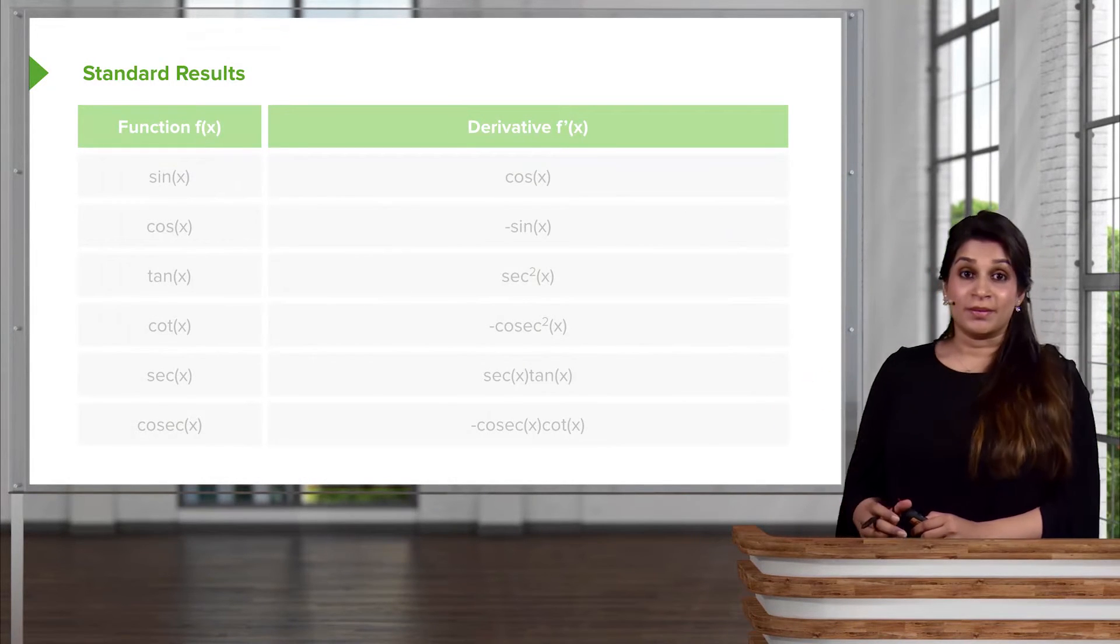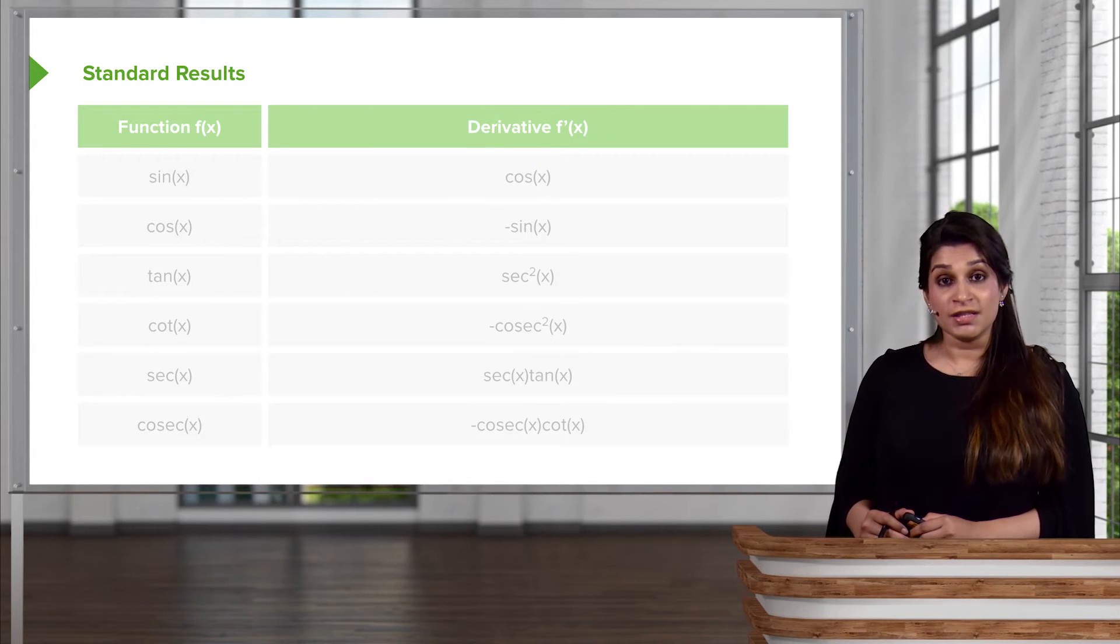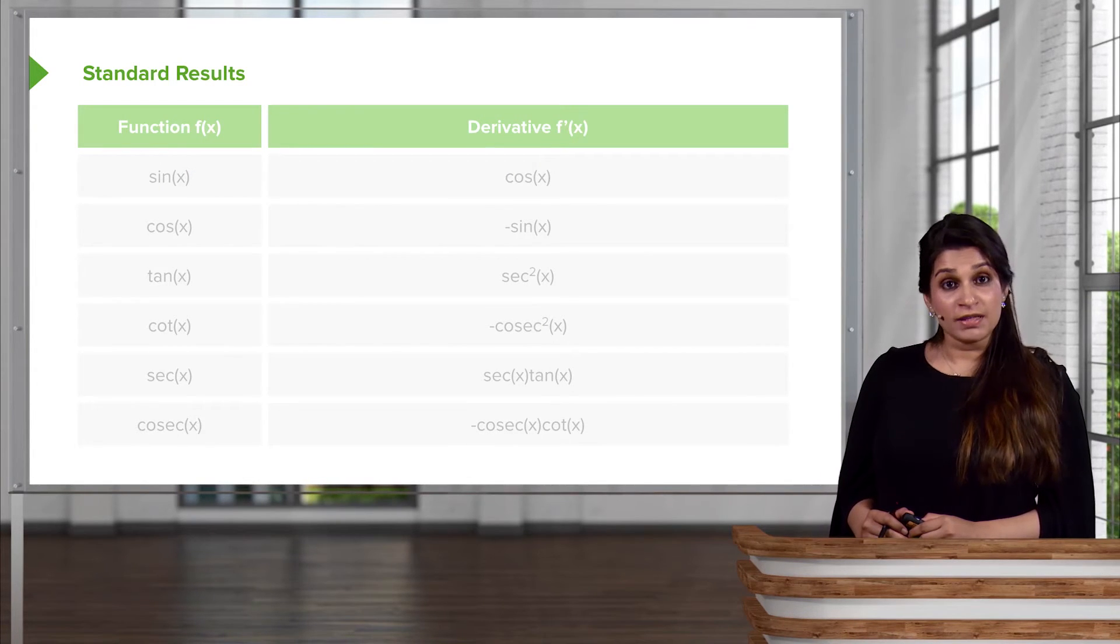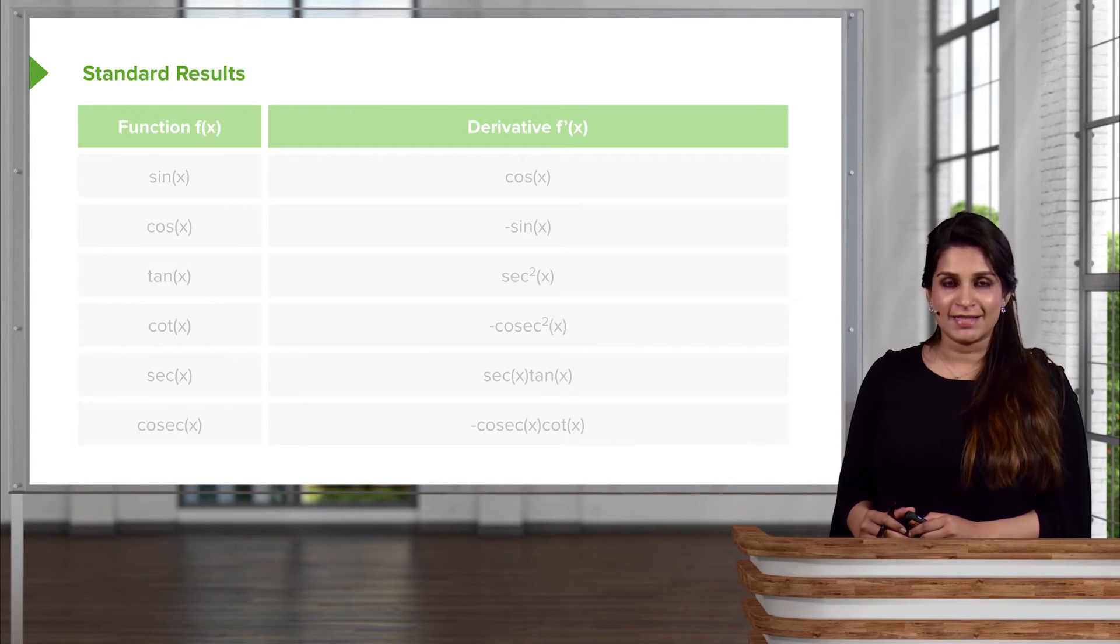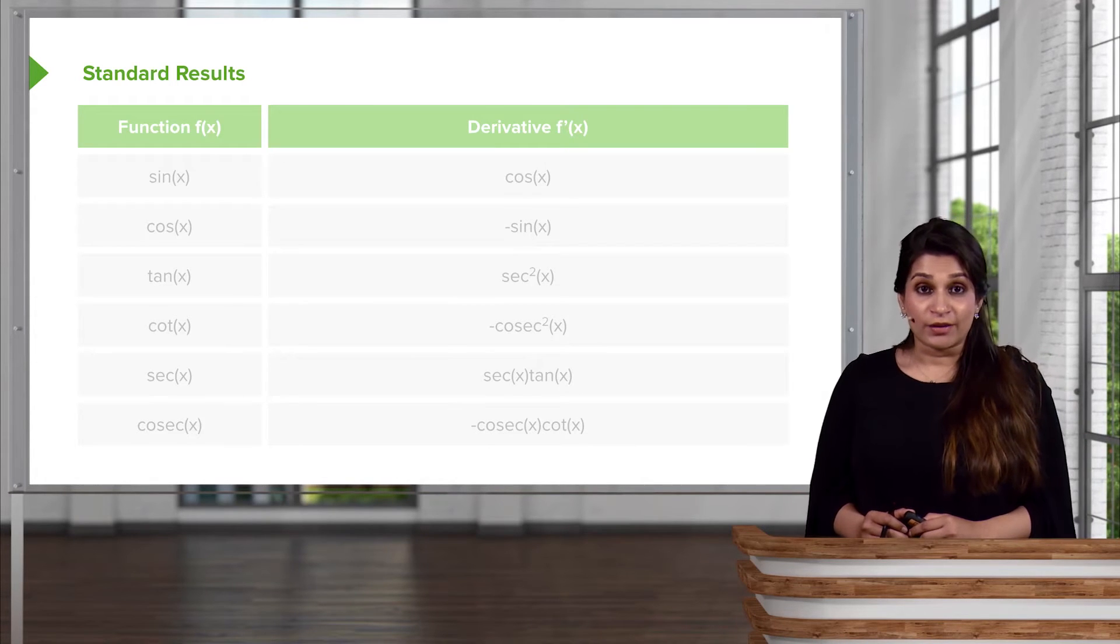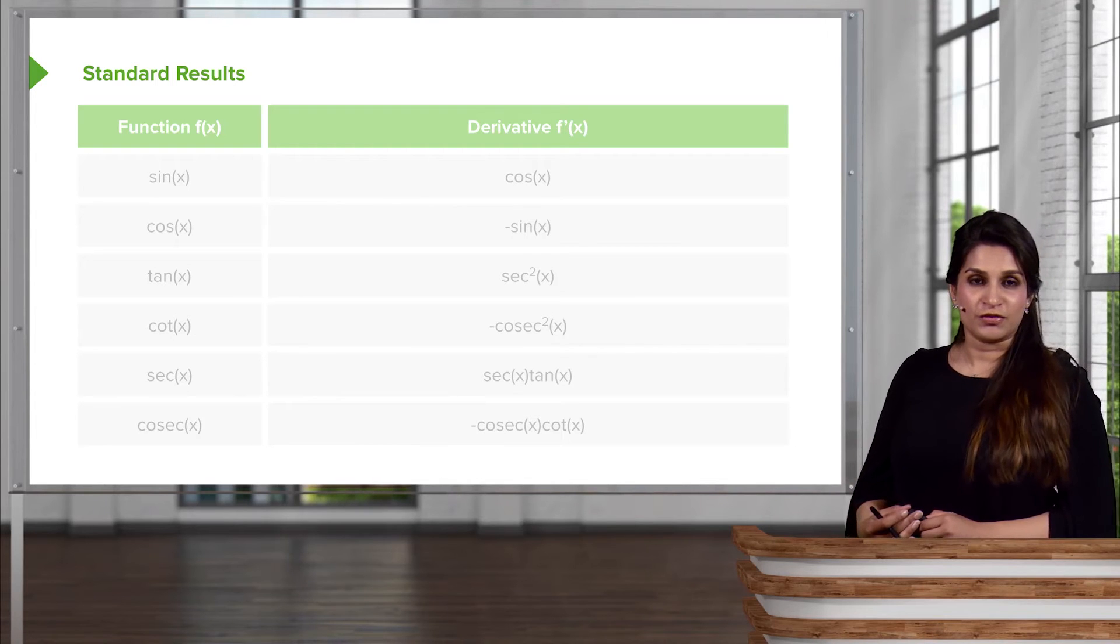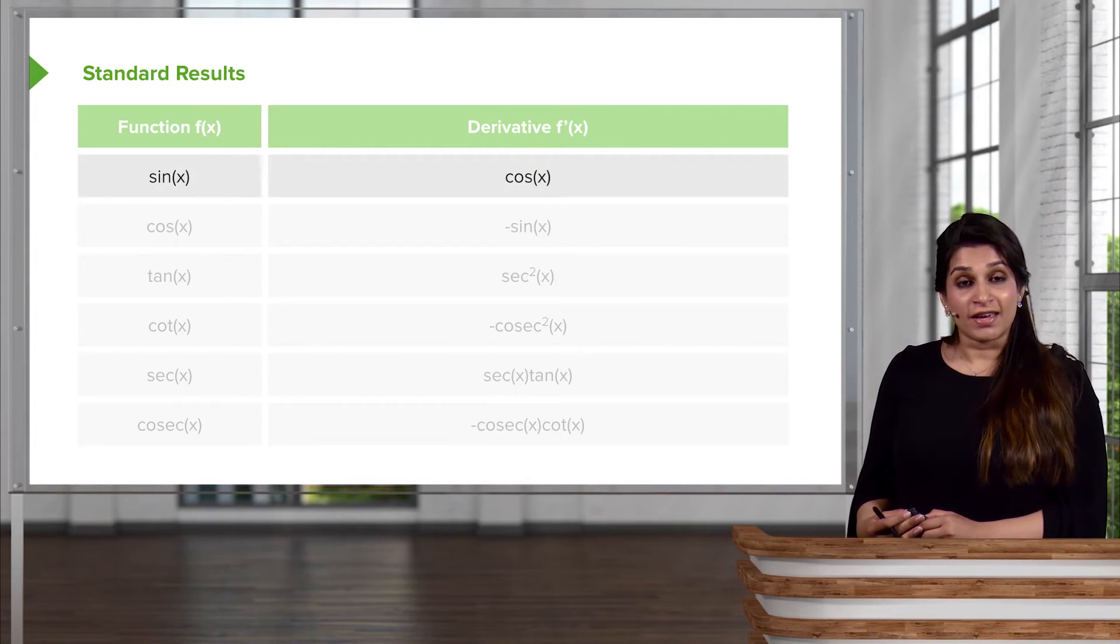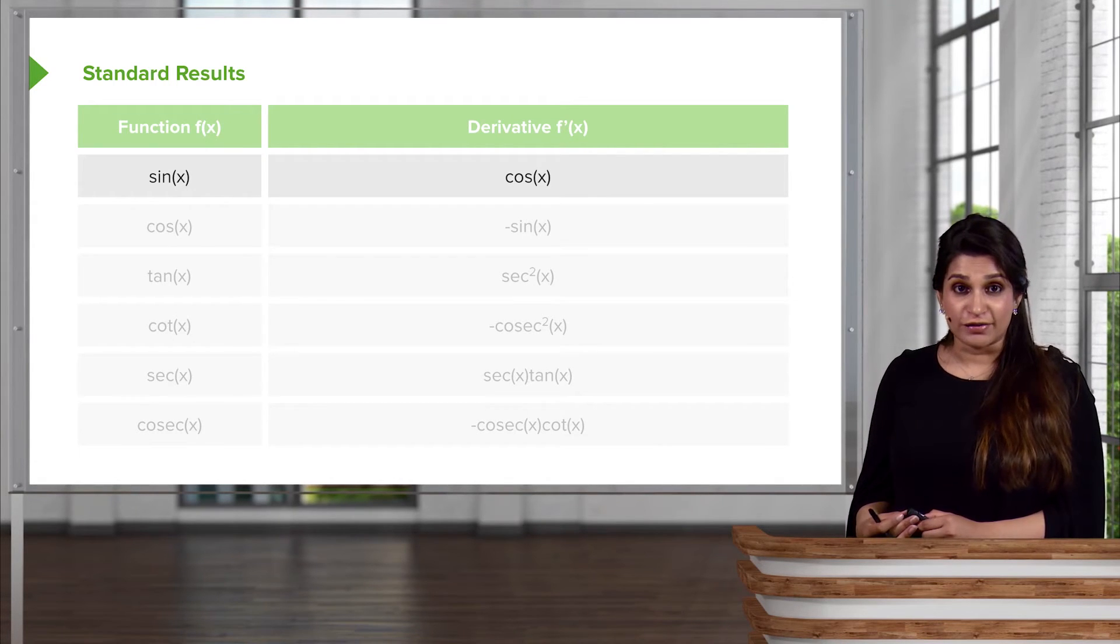We'll start by looking at this table. I'll give you some of the differentials of standard functions, and then we'll look at deriving some of them just to build up on our algebraic skills and our analysis skills, and then we'll go straight into doing some questions. These are some things that we just have to learn, but I will show you the proof just to convince you. If you have a function sine of x, the gradient or the differential of sine of x is simply cosine of x.